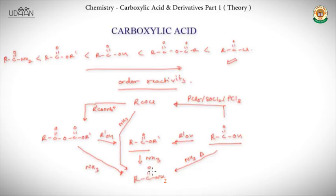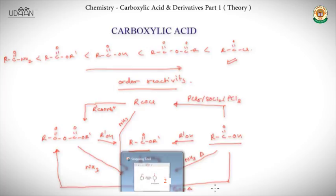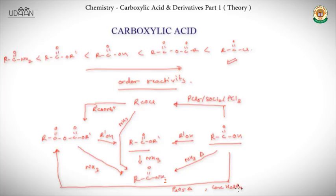Just by adding NH3 to anhydride we will get amide back. We can also proceed from RCOOH to anhydride. The process is either use P2O5 with heat or concentrated H2SO4.